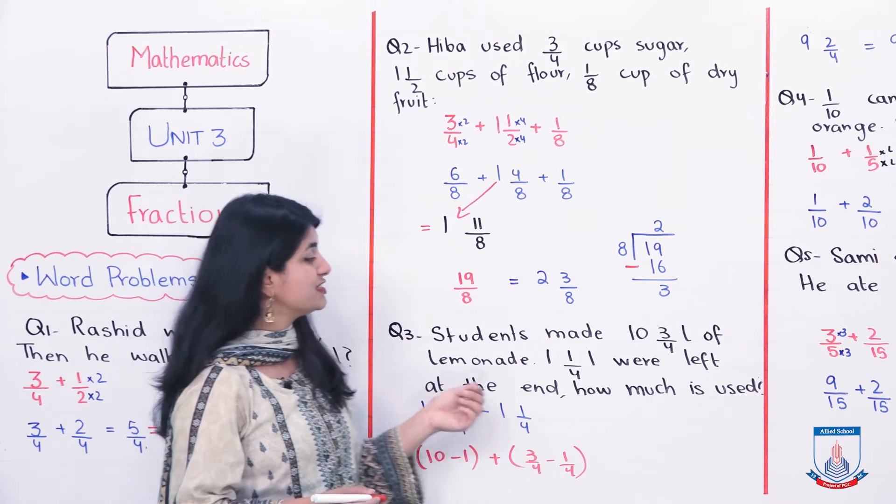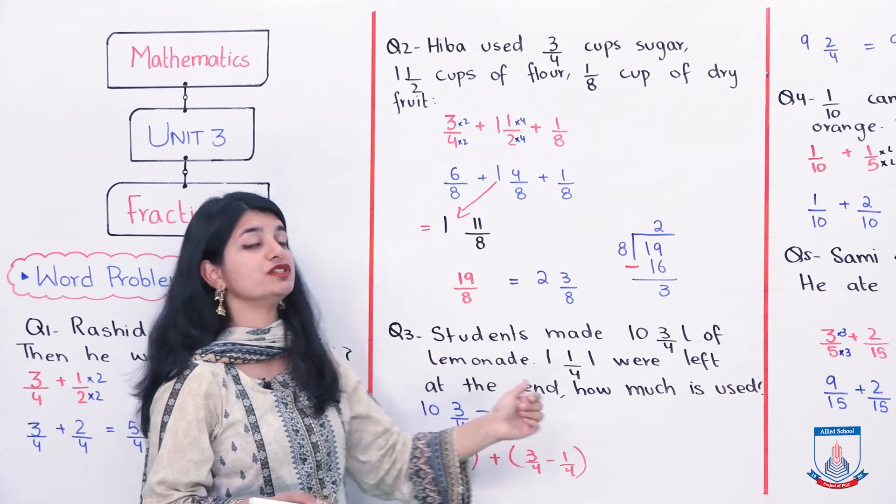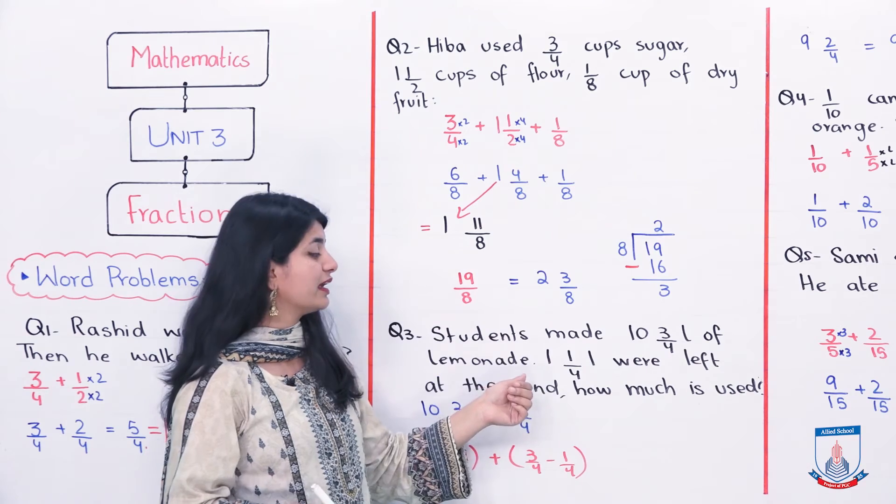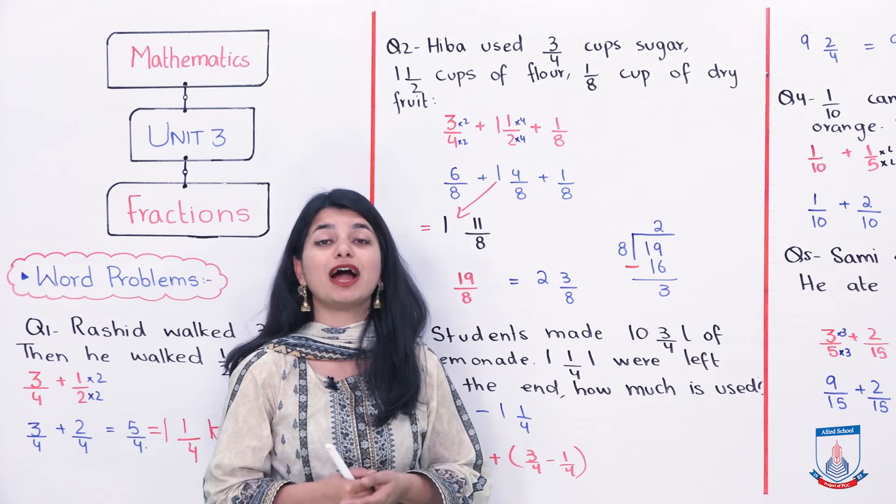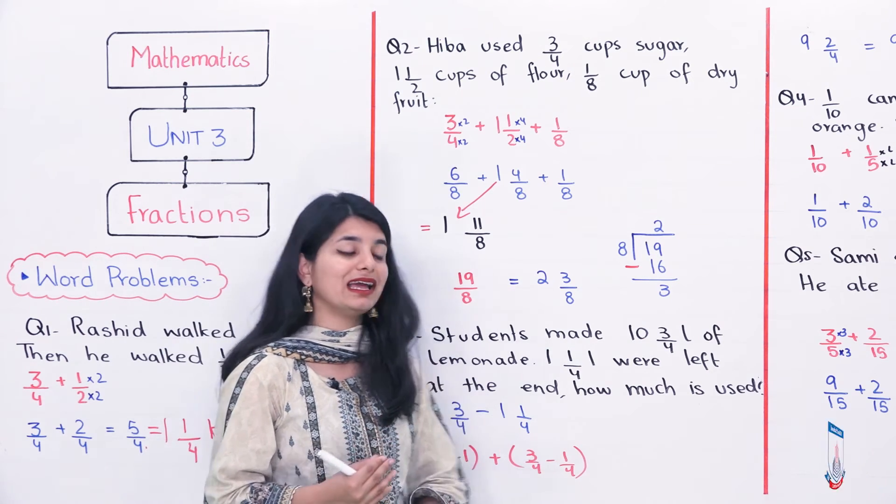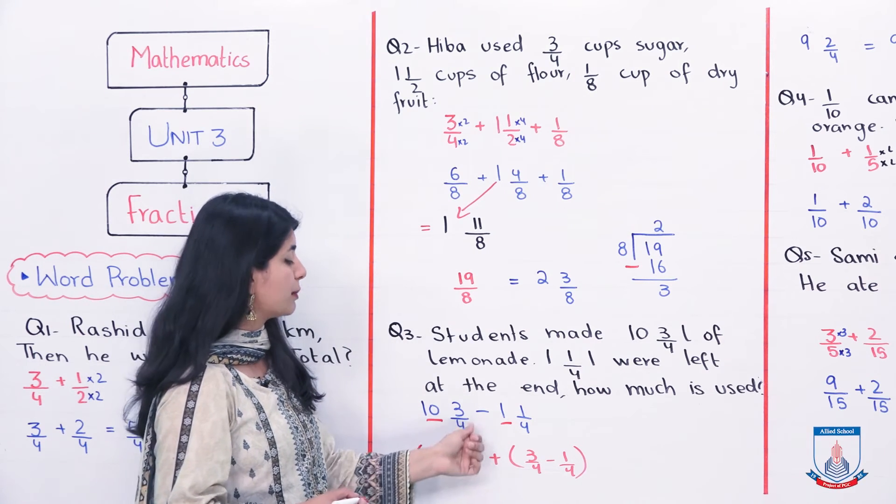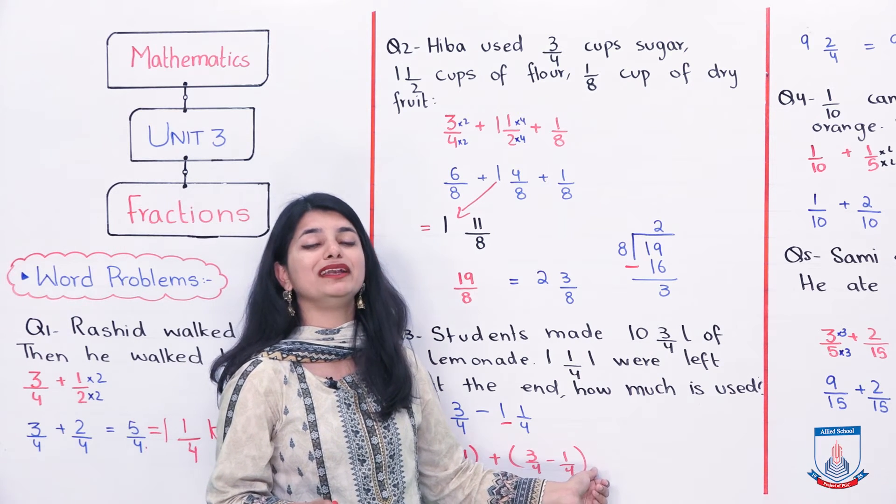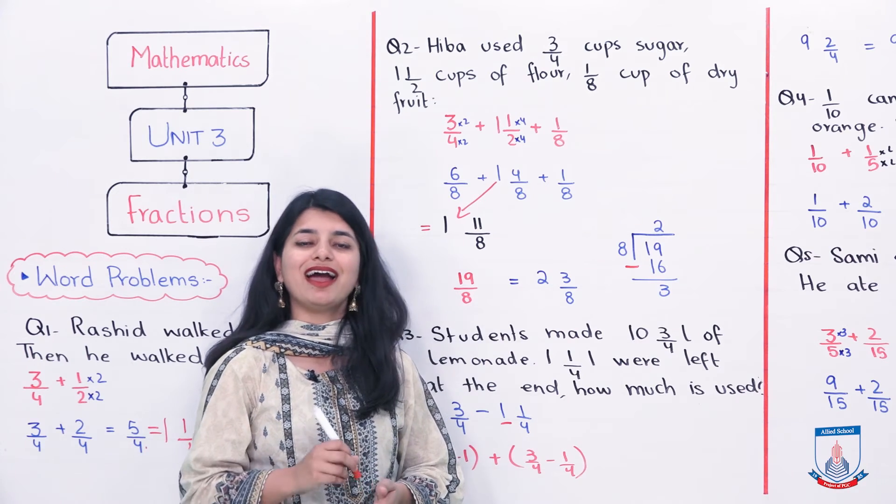Let's look at question number 3. Students made 10 whole 3 by 4 liters of lemonade on their gala day, 1 whole 1 by 4 liter were left at the end. How much was used? They made 10 whole 3 by 4 liters. 1 whole 1 by 4 were left. This means that the rest were used. So you need to subtract it. Now we will write these two fractions. We will write 10 whole 3 by 4 in the beginning, 1 whole 1 by 4 in the end. In the middle, we will subtract.